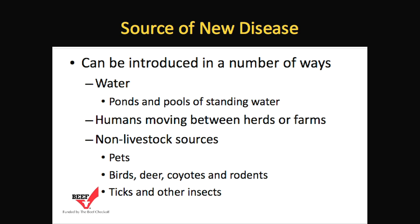New diseases can be introduced to your cattle operation in a number of ways. The first is water, which would include such things as ponds and pools of standing water which animals may have access to, in addition to stream water where animals upstream could contaminate the water supply and effectively infect your animals.